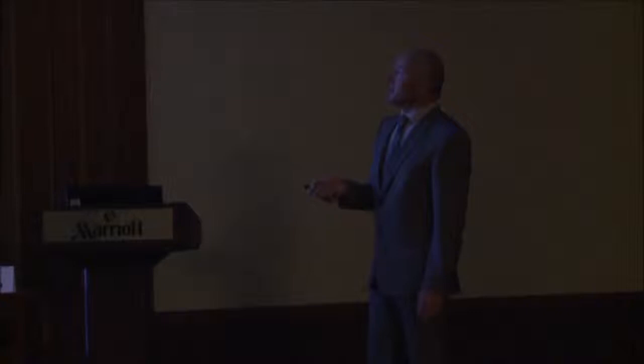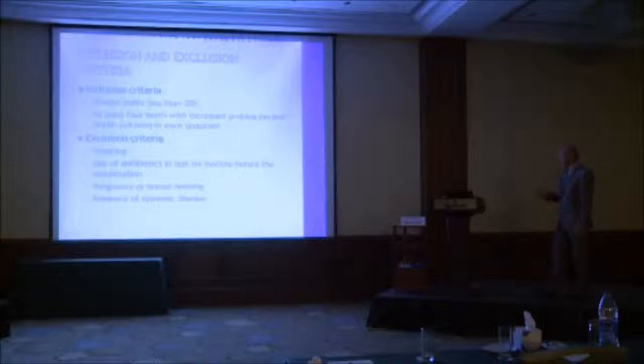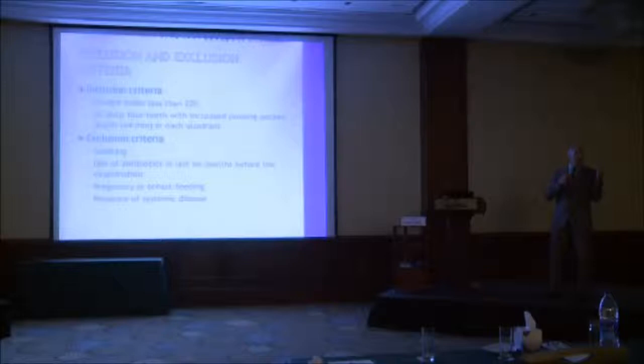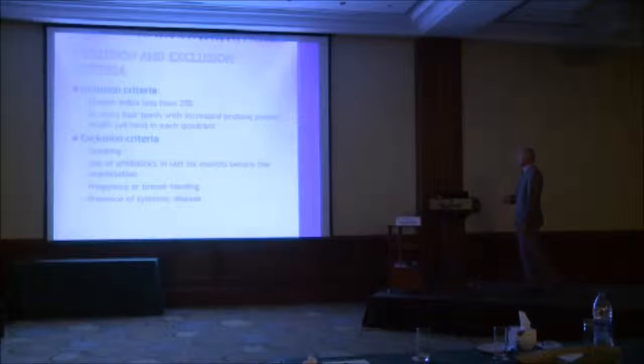Here you can see demographic characteristics of patients at baseline — each group includes nine patients — with distribution of gender and age. Inclusion criteria were plaque index less than 20%, and at least four teeth with increased probing pocket depth in each quadrant. Exclusion criteria were smoking, use of antibiotics in the last six months, pregnancy or breastfeeding, and presence of systemic disease.